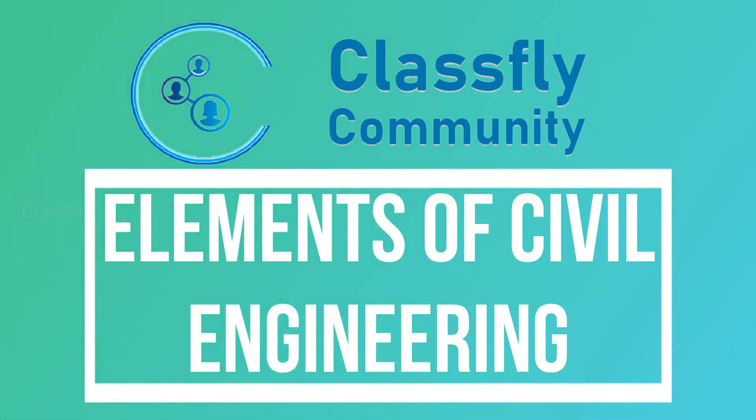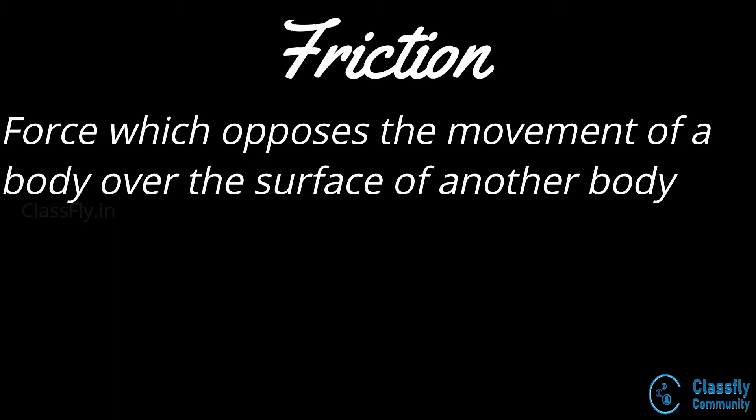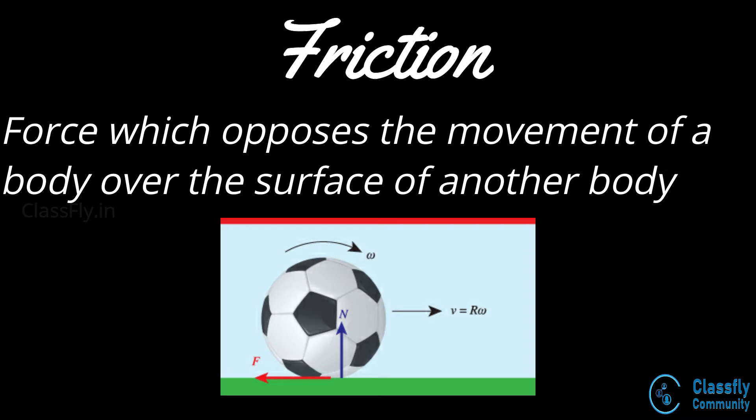Today let us study about the concept of friction. When a body tends to move in contact over another body, a resistance to its movement is set up — this resistance is known as friction or frictional force. For example, consider a ball rolling on the ground. From the first law of motion, the ball will remain in uniform motion until an external force acts upon it. In reality, the ball rolls for a certain distance and then comes to a stop due to the frictional force acting on it.